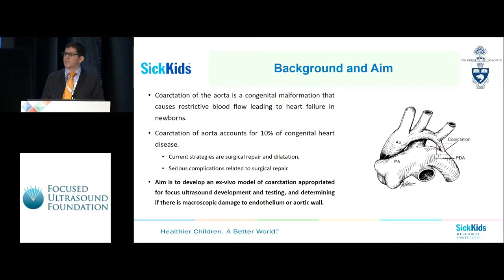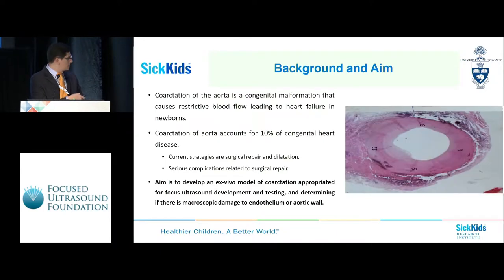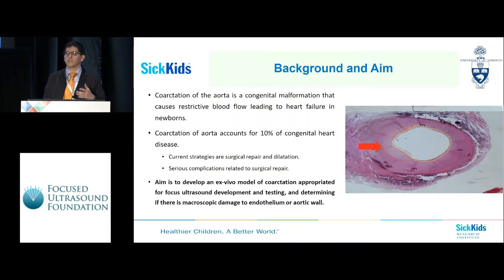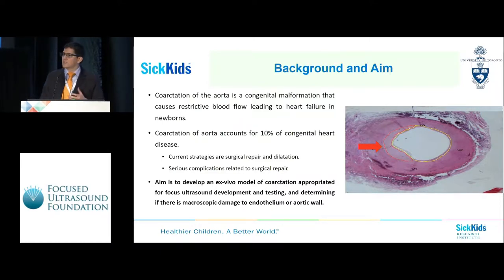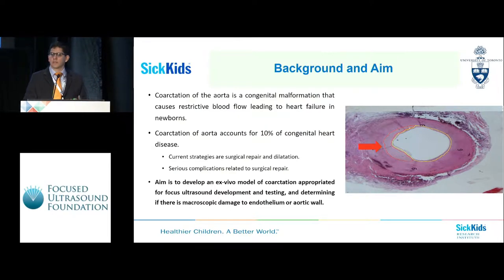Coarctation of the aorta is a congenital disease in which the proximal descending thoracic aorta is narrowed due to an intima proliferation that creates a shelf within the intima, as shown in the picture here with a red arrow. This restriction of blood flow leads to congestive heart failure and death if untreated.